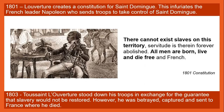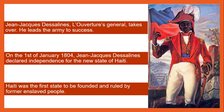Jean-Jacques Dessalines, Louverture's general, took over. He led the army to success. On the 1st of January 1804, Jean-Jacques Dessalines declared independence for the new state of Haiti. Haiti was the first state to be founded and ruled by former enslaved people.